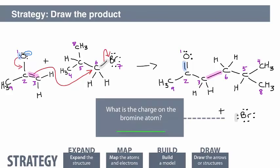What is the charge on the bromine atom, if any? Bromine has a minus 1 formal charge.